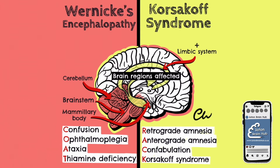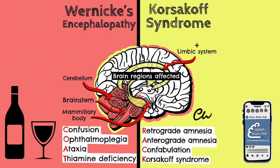Confabulation is not the same as lying; rather, when someone confabulates, they are confusing things that they have imagined with real memories. Korsakoff syndrome is a late complication of persistent Wernicke's encephalopathy and results in memory defects, confusion, and behavioural changes. It occurs in 80% of untreated patients with Wernicke's encephalopathy, and severe alcoholism is a common underlying cause.